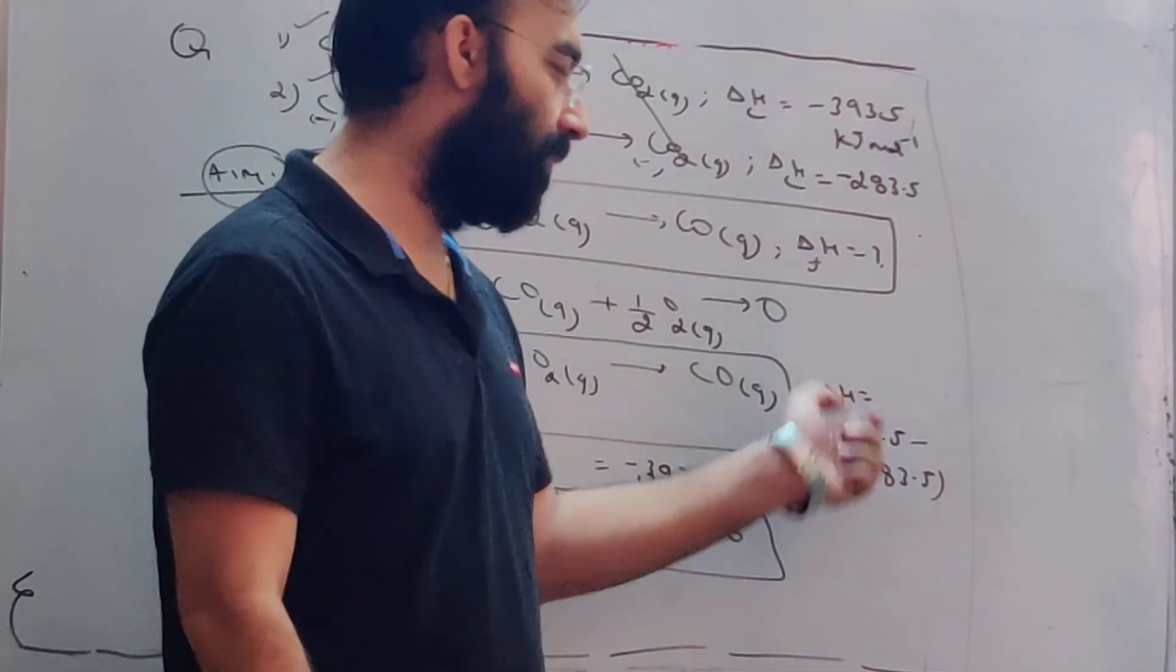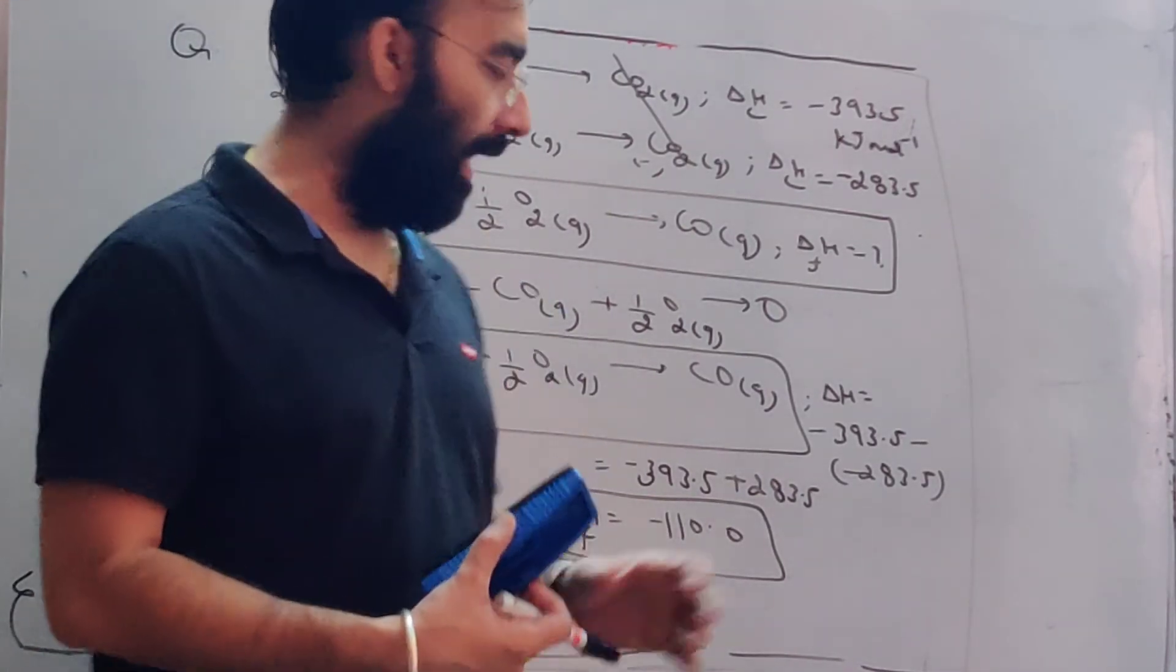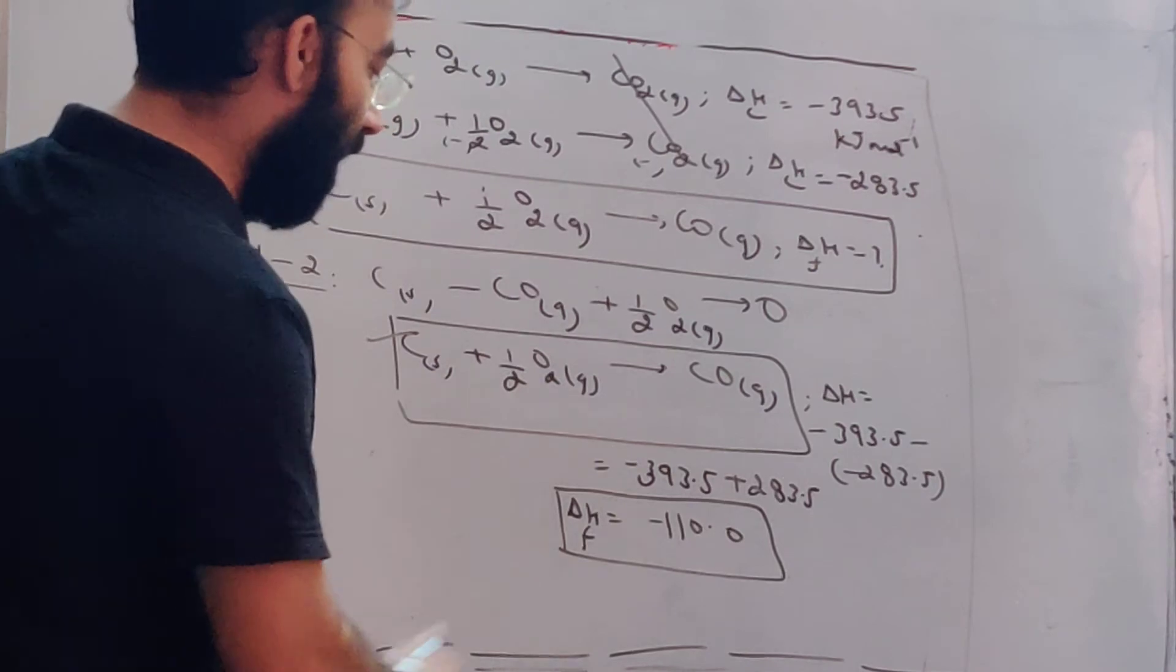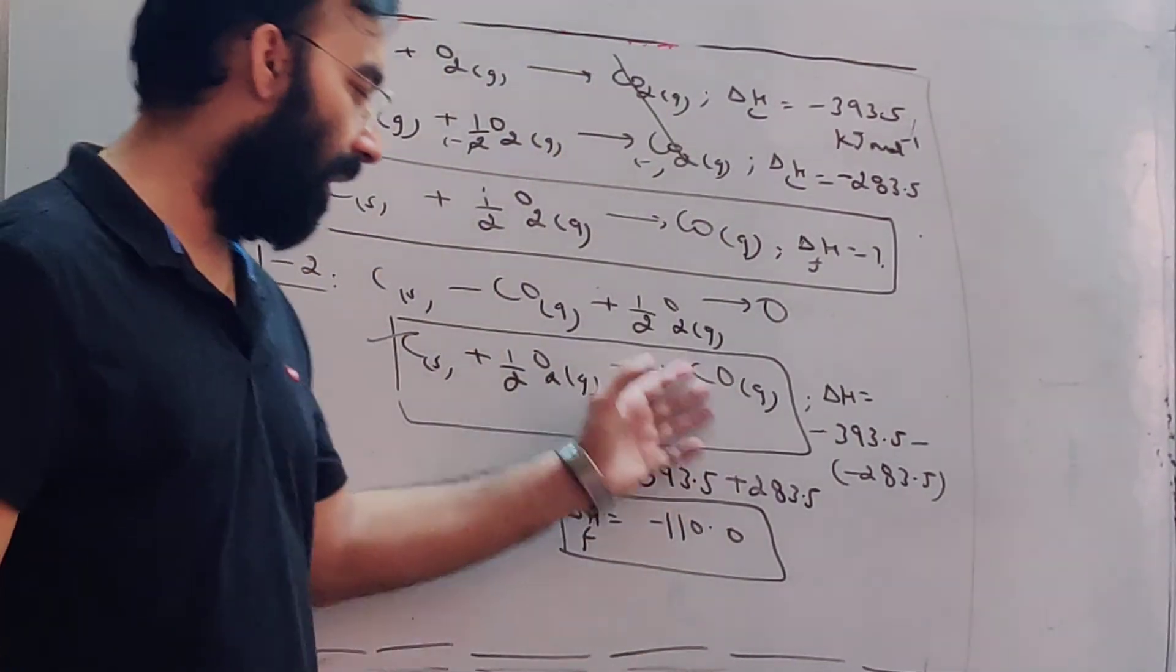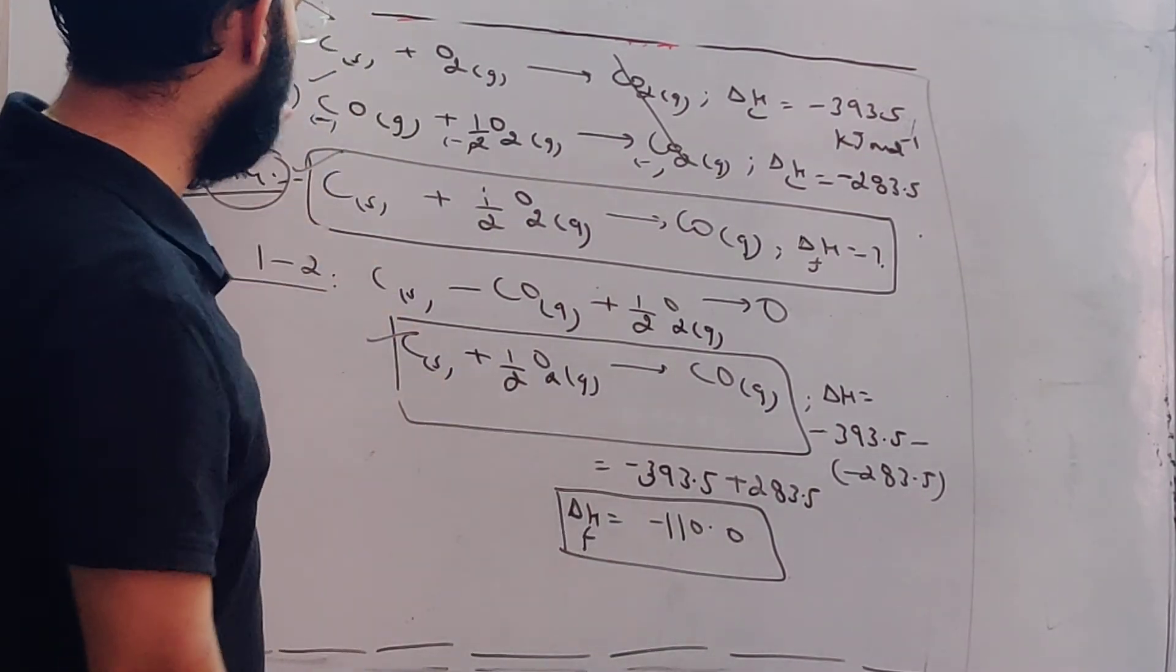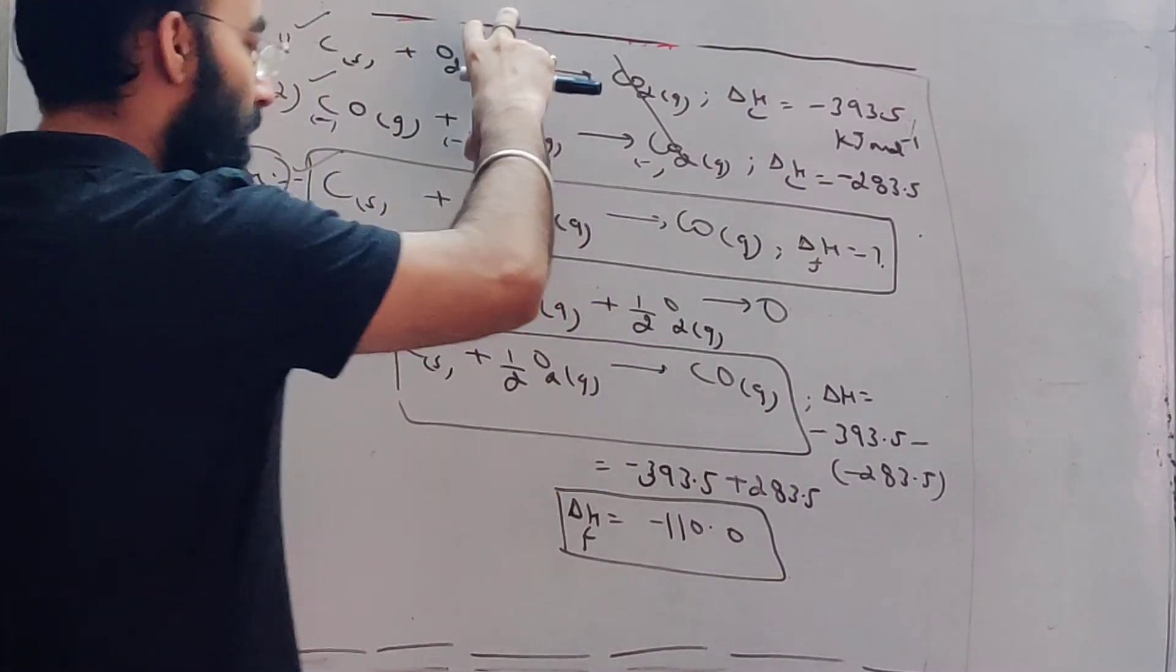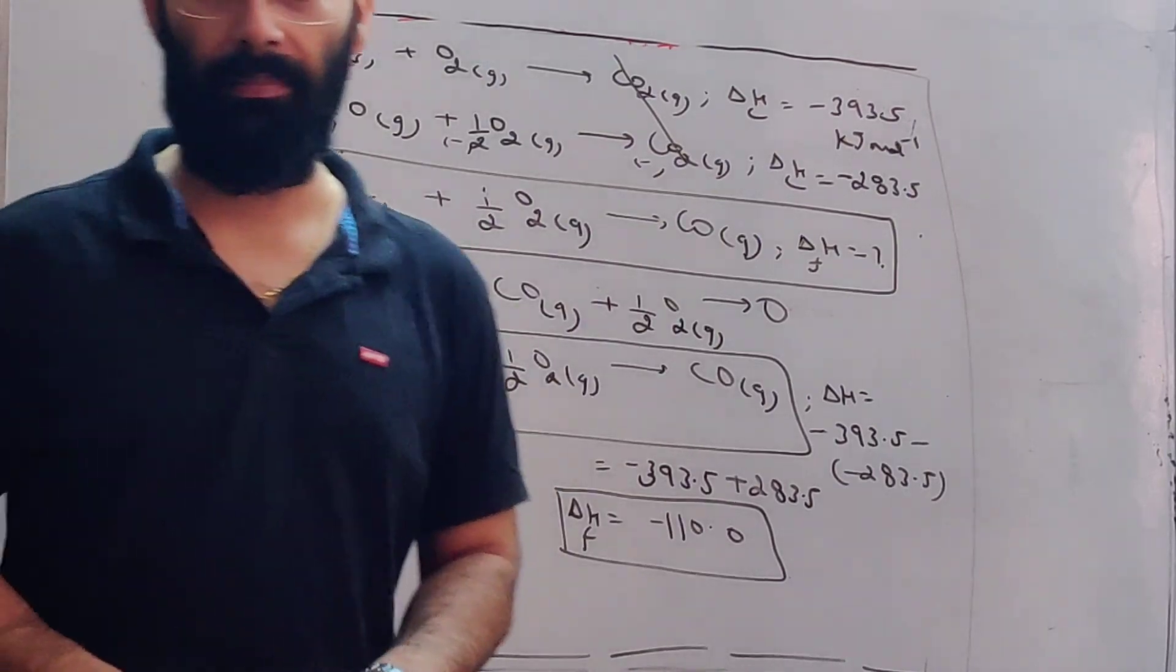I think maybe in the option it was minus 110.5 - maybe what I wrote from the book was wrong. But actually, the enthalpy of formation should be minus 110. This is the enthalpy of formation of carbon monoxide. This is the actual way of doing such questions - the correct method is this way. It wasn't difficult at all. The data given in the question, I first wrote two equations, then wrote the aim, then saw what I don't need, subtracted, and reached the target. Thanks very much for being with me, take care, bye bye.